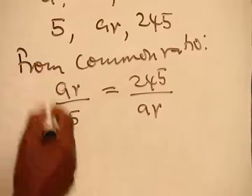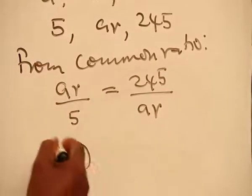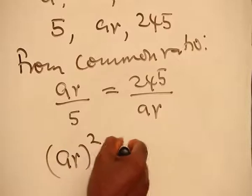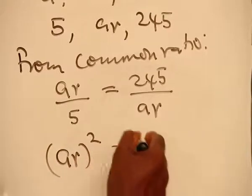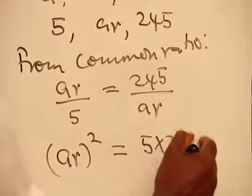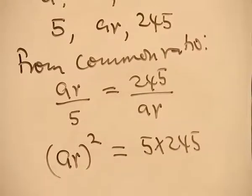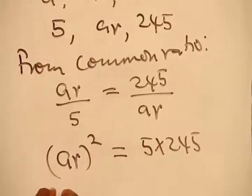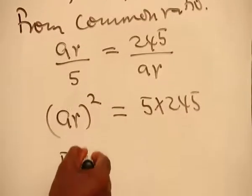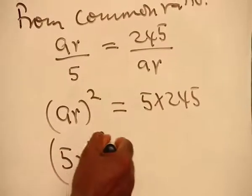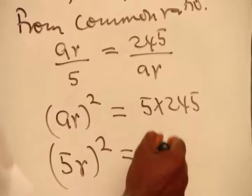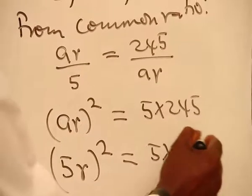Cross multiply: Ar squared is equal to 5 times 245. Remember that our A is 5, and then r squared is equal to 5 times 245.